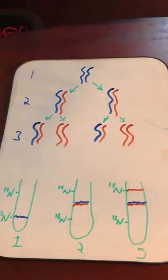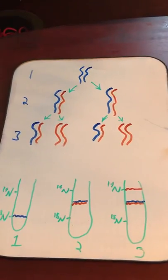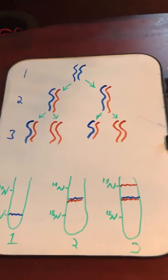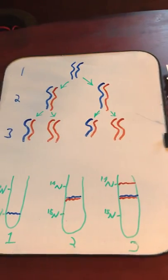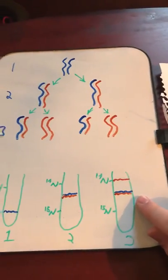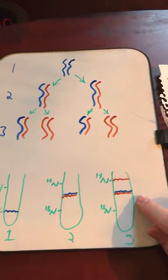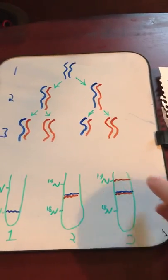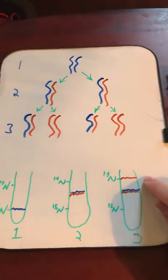The DNA was allowed to replicate once again in Nitrogen-14 solution, and it was separated out once again. Similar to the previous time, there was a level in between Nitrogen-14 and Nitrogen-15 that DNA showed up, but there was also a level only at the Nitrogen-14 level that showed up.